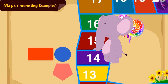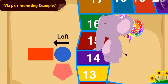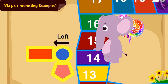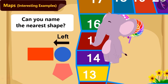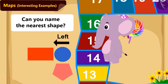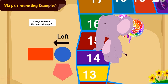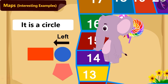On the left side of tile number 14 are paintings of 3 shapes. Among them, can you name the shape nearest to number 14? Yes, it is a circle.